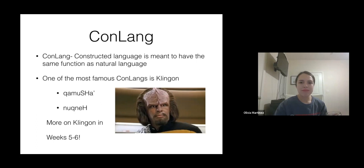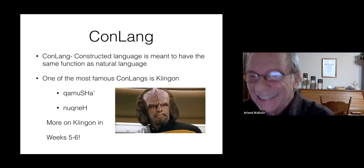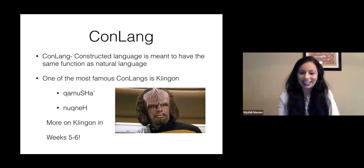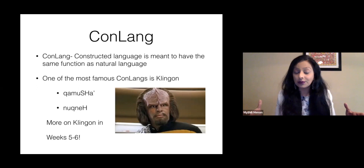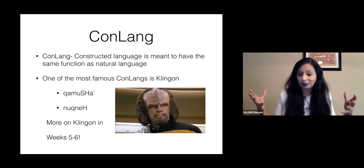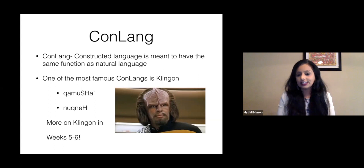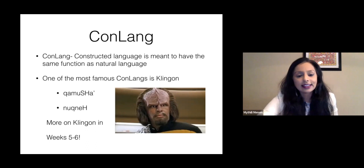Klingon was created for Star Trek. It's so famous that you actually have Shakespeare translated into Klingon — that's how famous Klingon is. It's kind of like the mother of constructed languages. Here are two phrases in Klingon: the first is 'qamusha,' which is how you say 'I love you' in Klingon. So if you want to use that with your partner, 'qamusha' is how you say 'I love you' in Klingon.